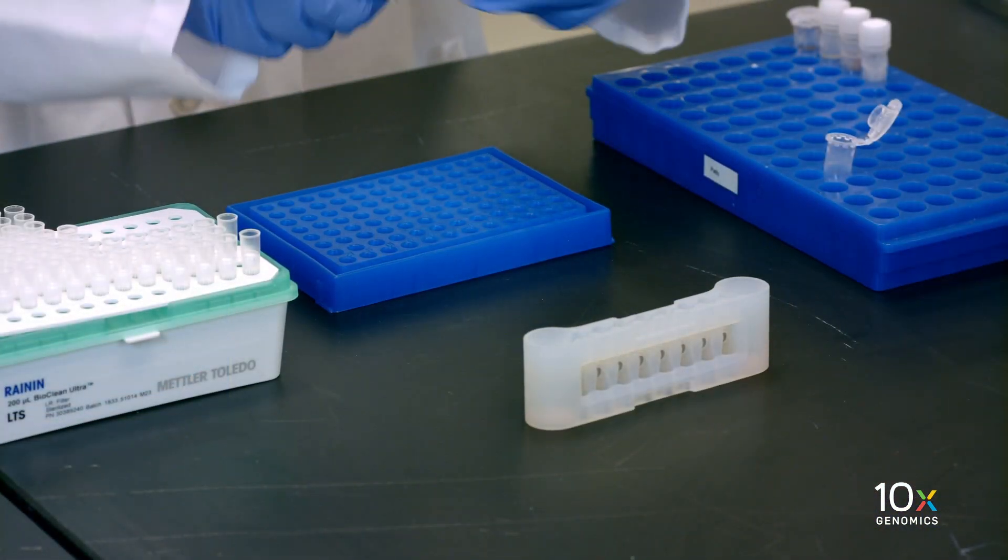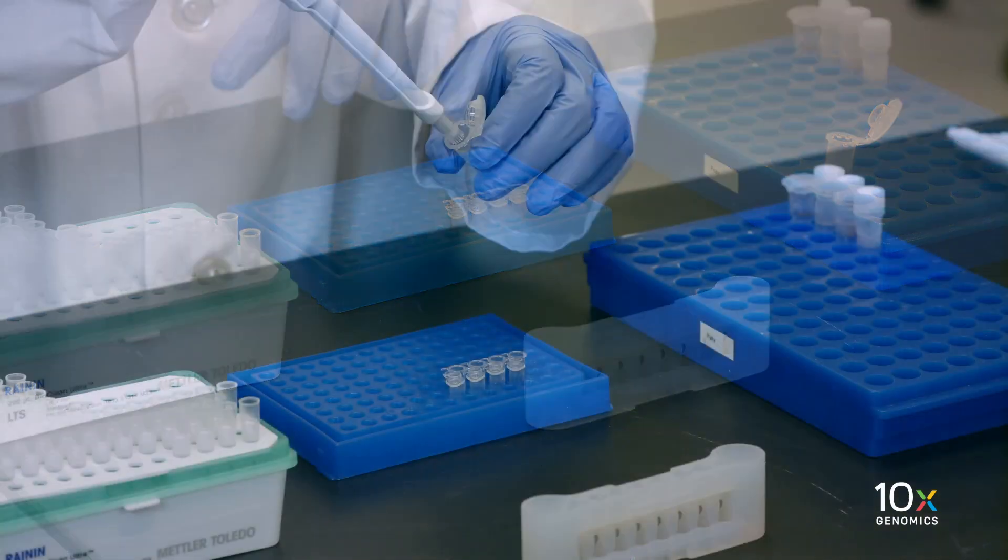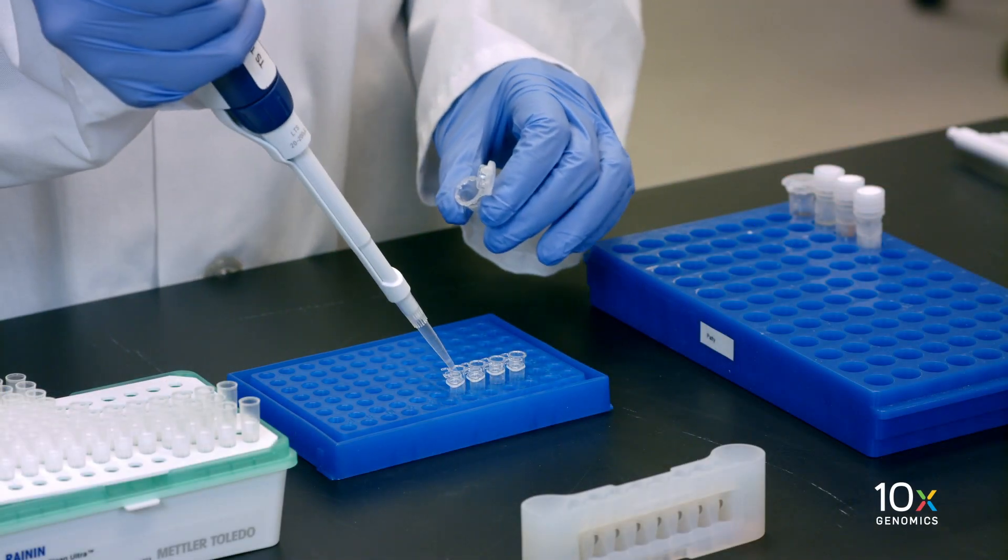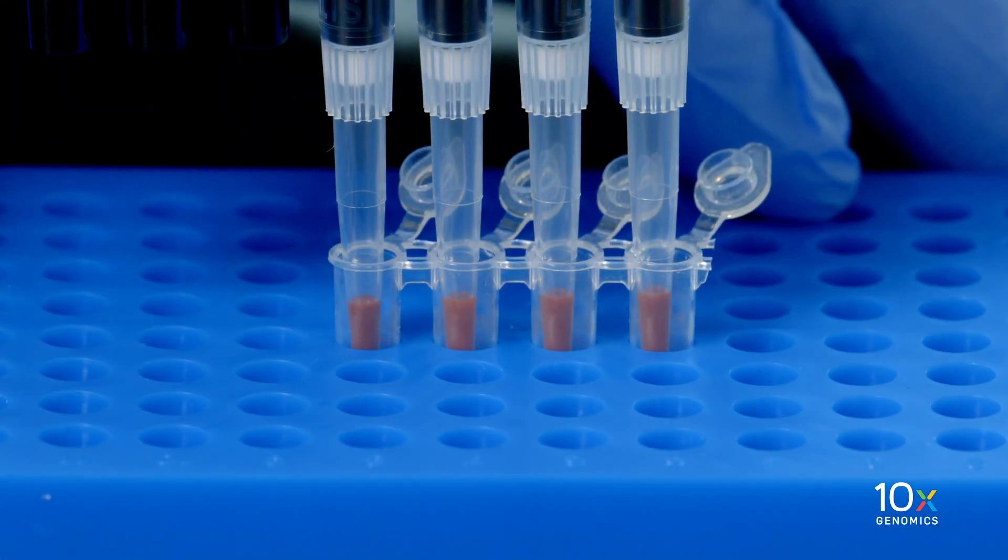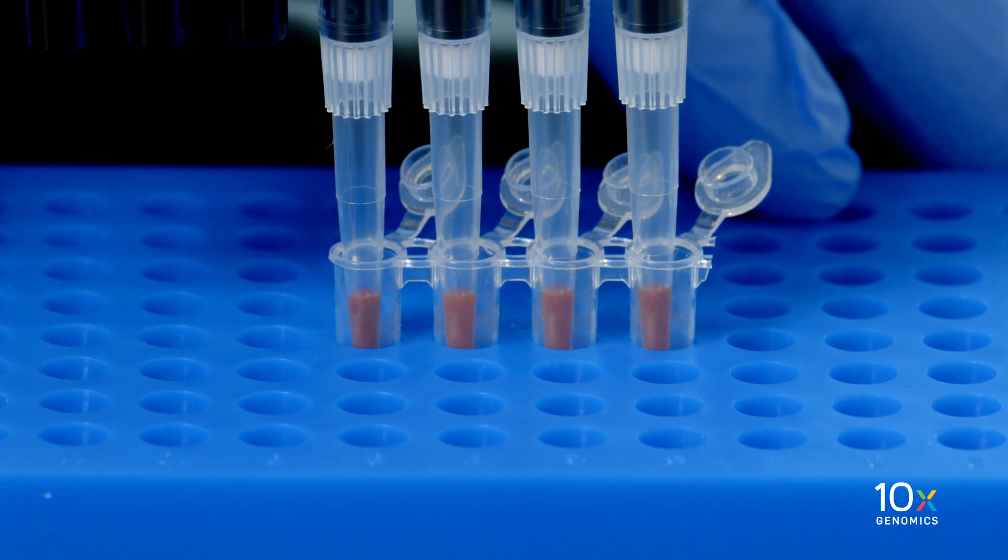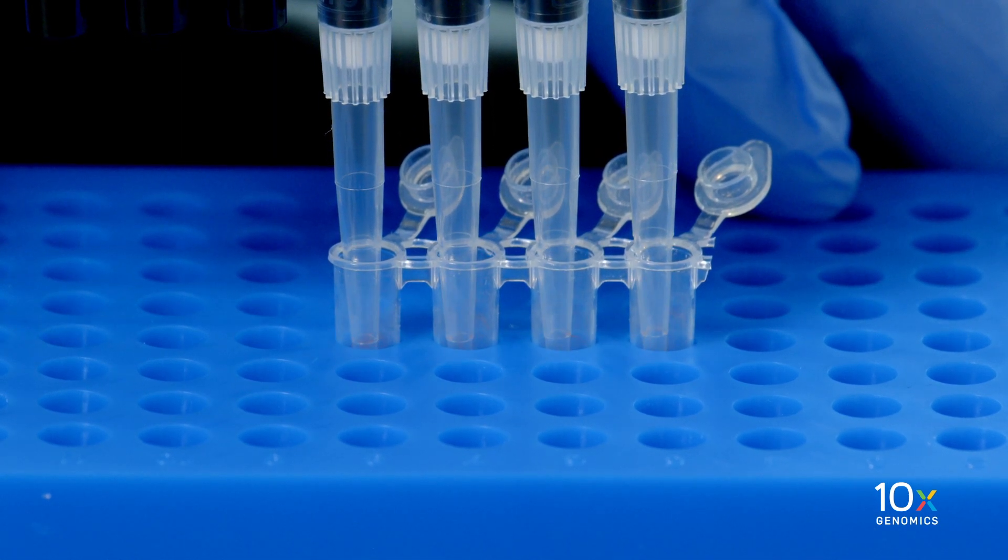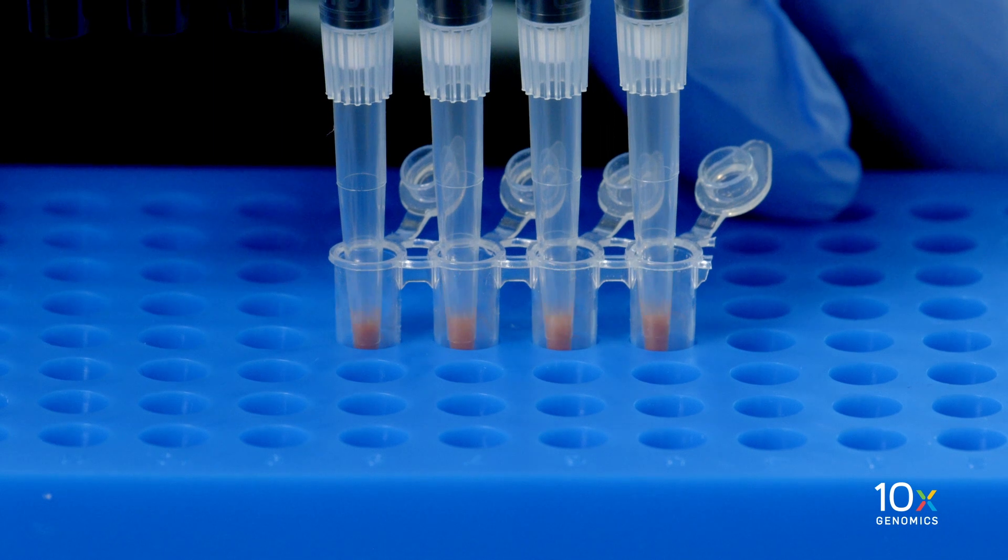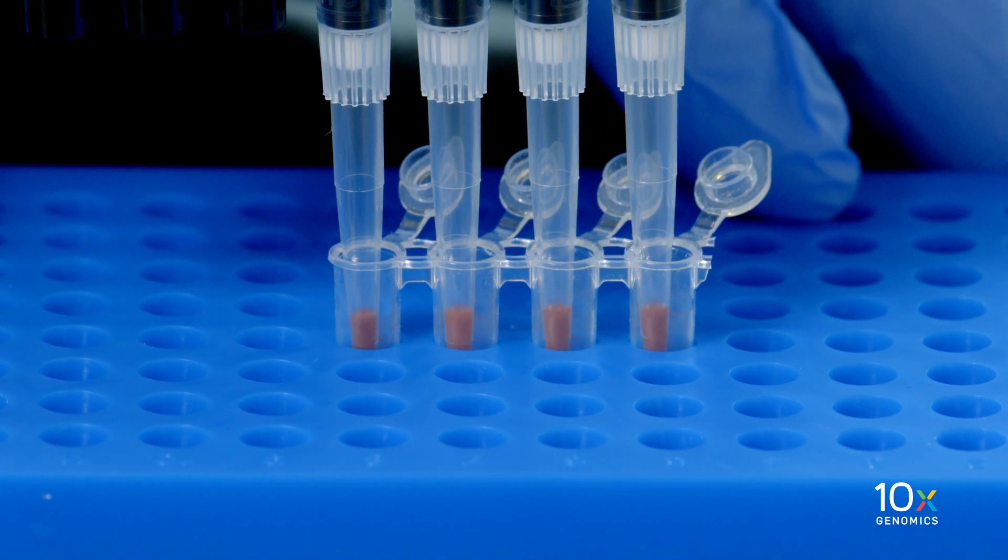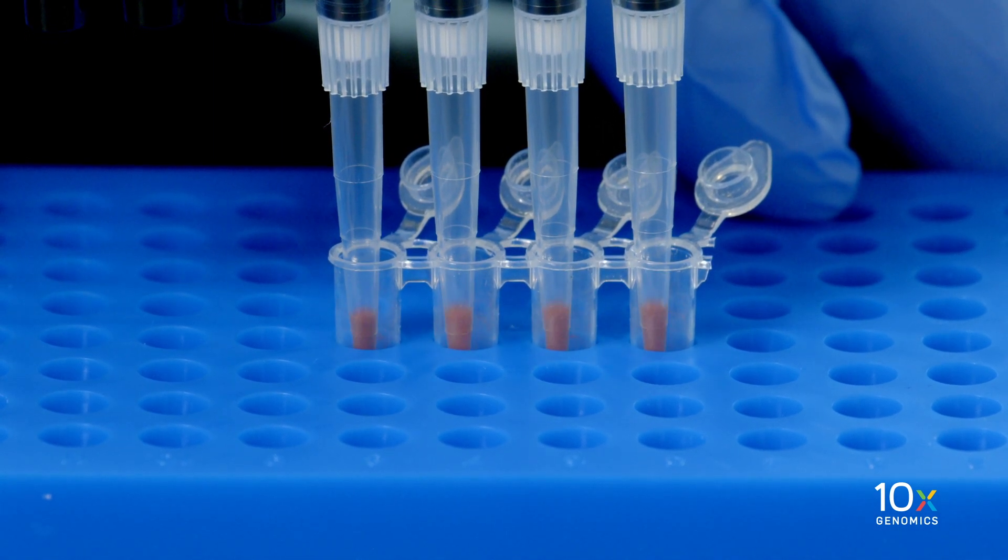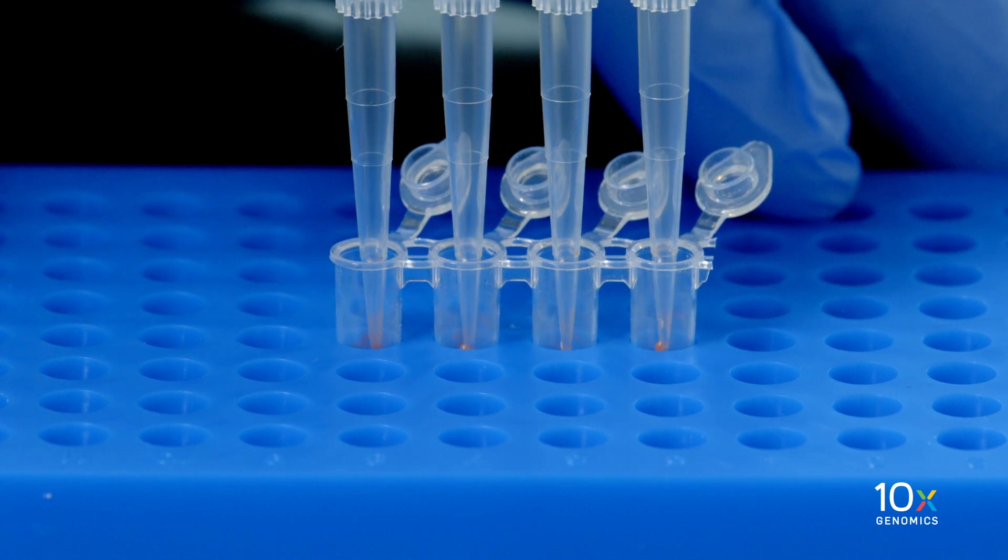Remove the tube strip from the magnet, and immediately add 35.5 µL of Elution Solution 1. Pipette mix thoroughly with the pipette set to 30 µL until the beads are fully resuspended, and avoid introducing air bubbles. Incubate at room temperature for two minutes.